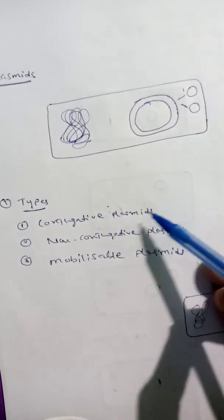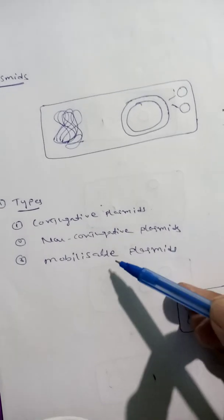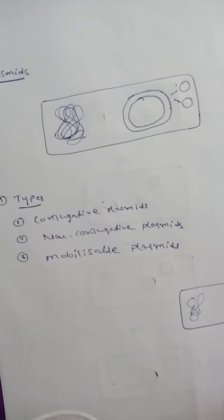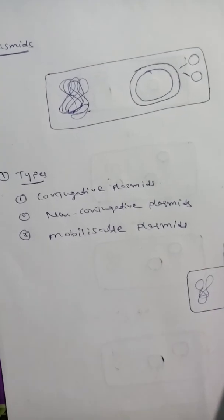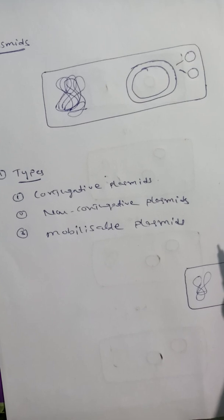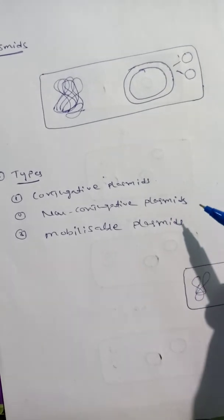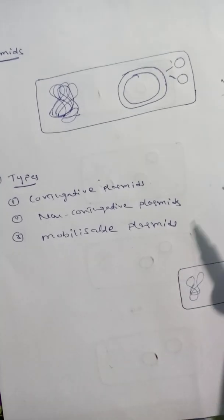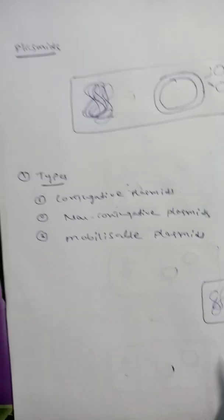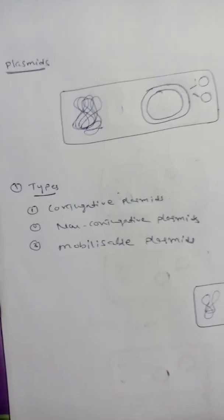This plasmid DNA is classified into three types: conjugative plasmids, non-conjugative plasmids, and mobilizable plasmids. This classification is based on their ability to transfer to other bacteria.